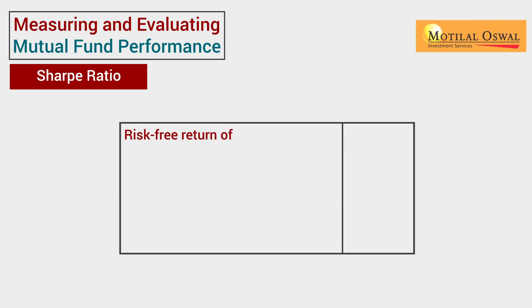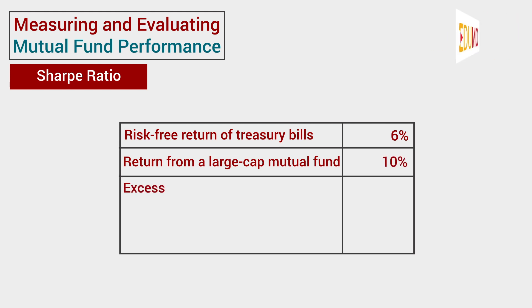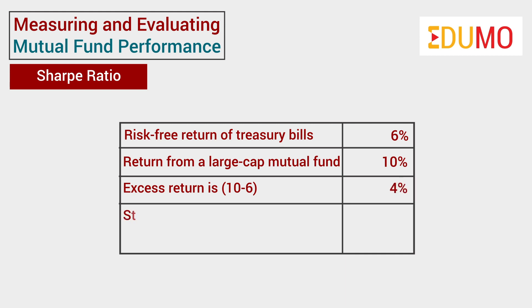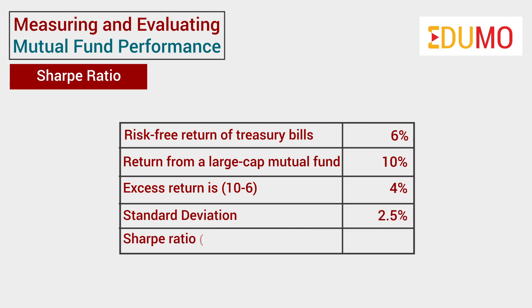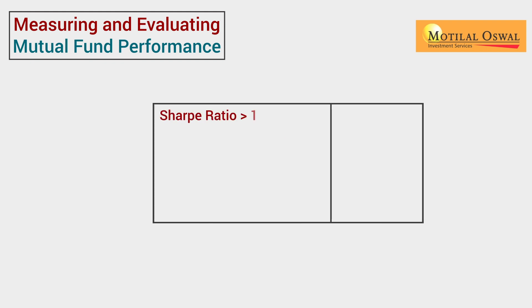Suppose the risk-free return of treasury bills in India is 6%, and let's assume that the return from a large-cap mutual fund is 10%. Therefore, the excess return is 10 minus 6, that is 4%. Now, if the standard deviation is 2.5%, the Sharpe ratio will be 0.04 divided by 0.025, that is 1.60.